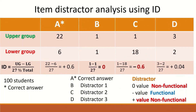Another way to analyze the item distractor is to use the item discrimination following Kelly's method. Here is an example for 100 students answering a multiple choice question with four options. A is the correct answer and B, C, and D are the distractors. To perform this analysis, the total scores achieved by each individual student are calculated, arranged from high to low, and based on that total score, an upper group and lower group are generated. The upper group has the top 27% total score and the lower group has the lowest 27%.